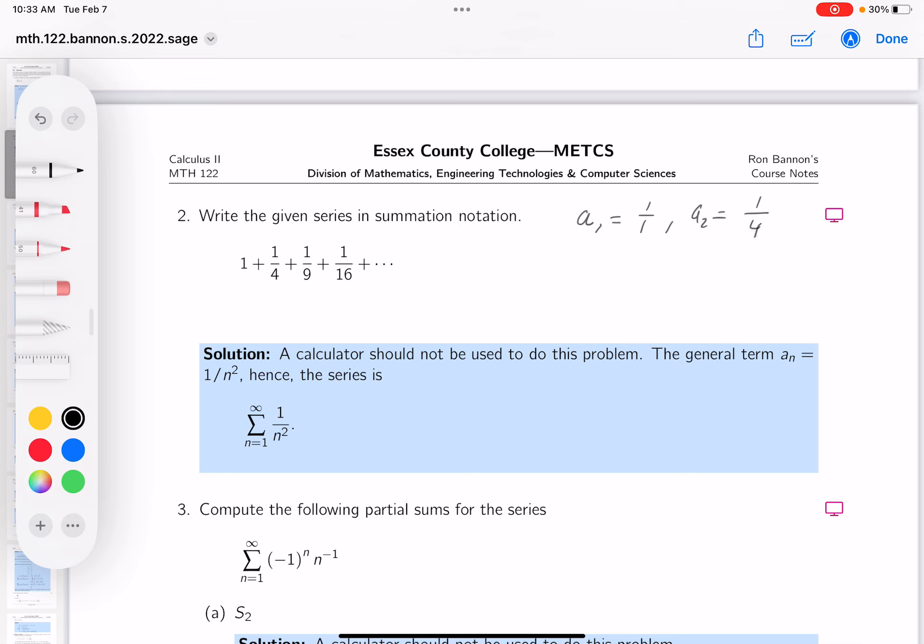I start to realize just looking at the terms, an looks like it's always going to be 1 on top, and the bottom is just simply n squared. I see 1 squared, 2 squared, 3 squared, and so on.